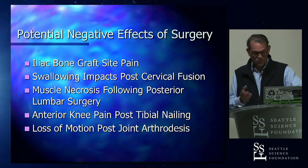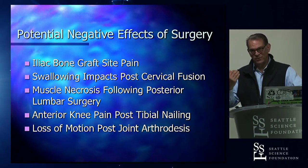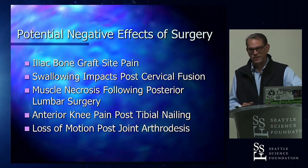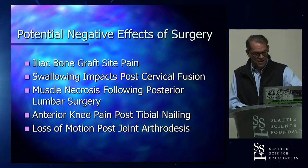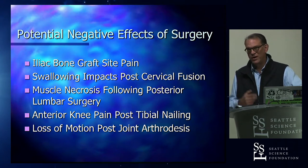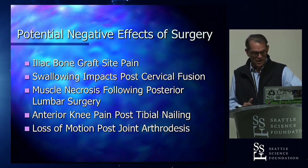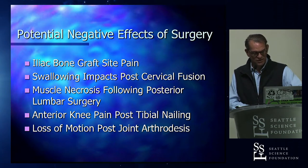Anterior knee pain is another example — many patients come back with pain at the insertion site of a tibial nail for a tibial fracture. And then the one I'm speaking about here with respect to spine: loss of motion following joint arthrodesis. We use total hip replacement with motion rather than hip fusion because a hip fusion is disabling, and the question is whether it's the same loss of function from fusion in the spine.